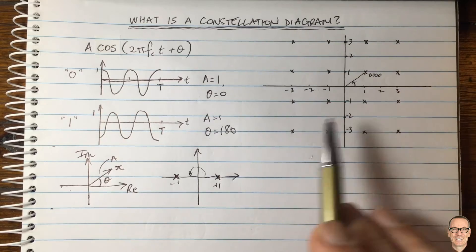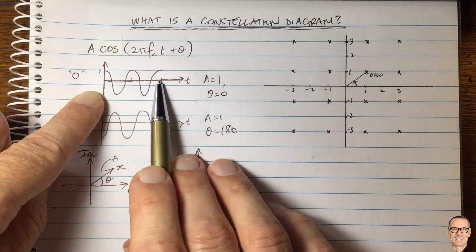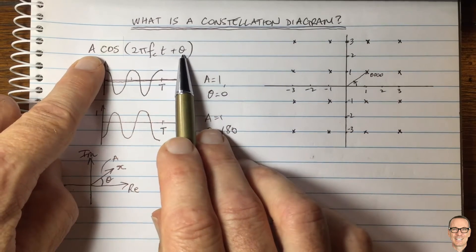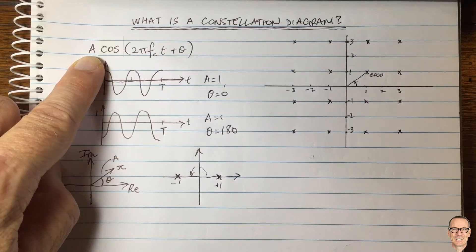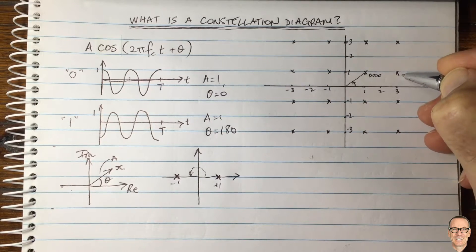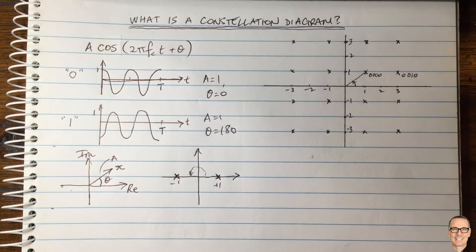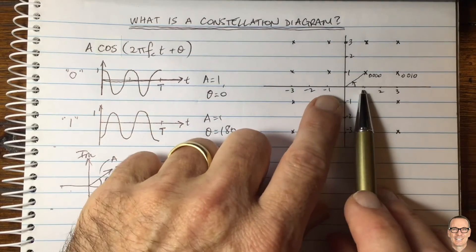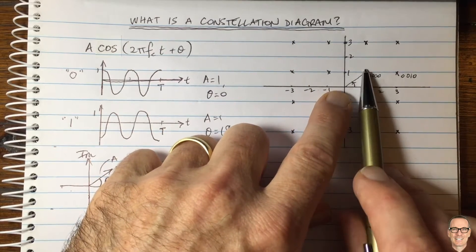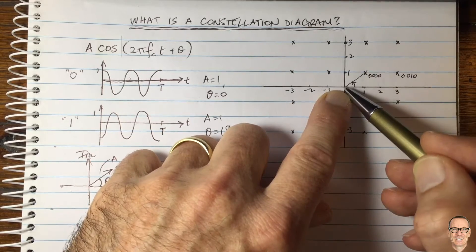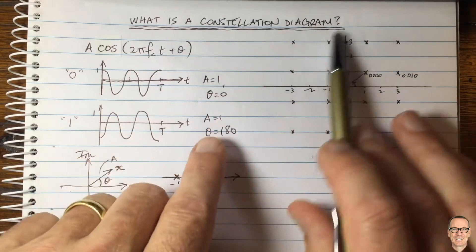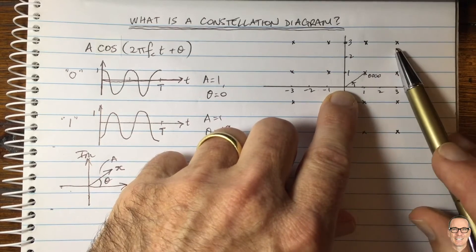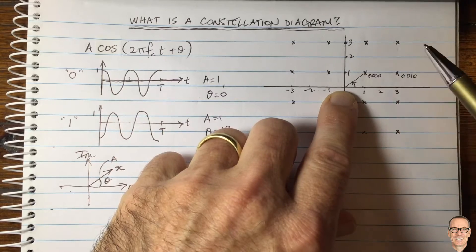When you look at constellation diagrams, always be thinking about the waveform being transmitted — it's transmitted for a fixed period of time at a fixed carrier frequency, and the variables you choose are amplitude and phase. So this point could represent bit sequence 0 0 1 0, and there's flexibility in how you map sequences to constellation points. Notice that these points are placed in a square grid at positions like plus one, plus one — so the amplitude here is bigger than one. Out at position 3 in real and 3 in imaginary, the amplitude is bigger still.